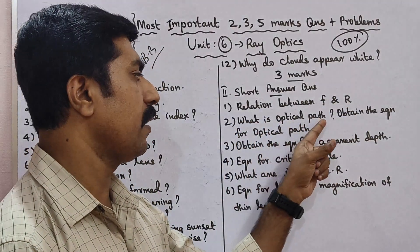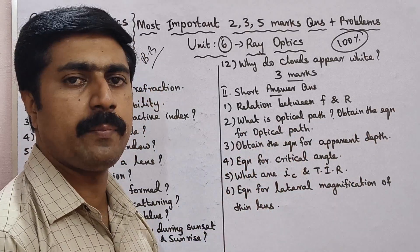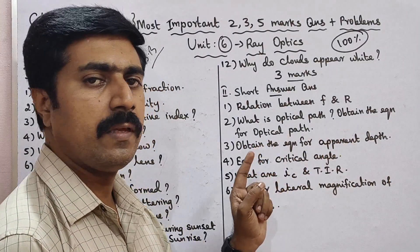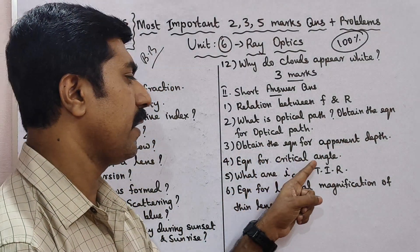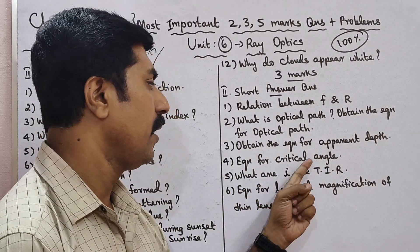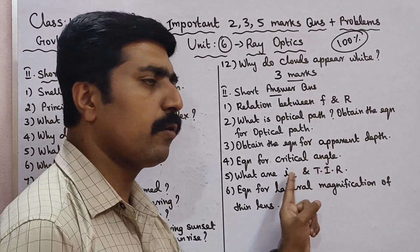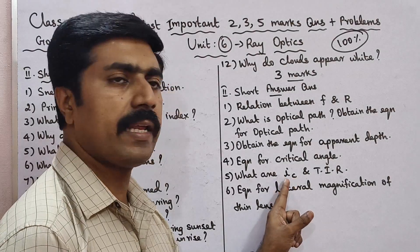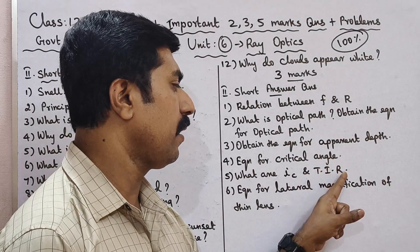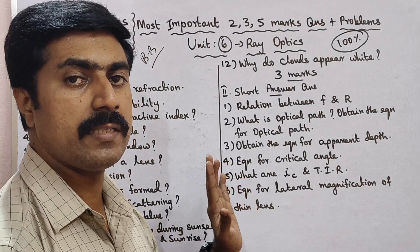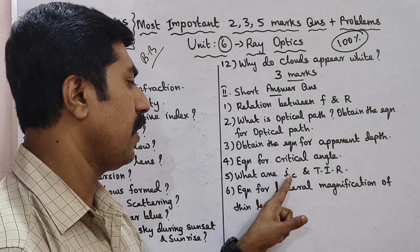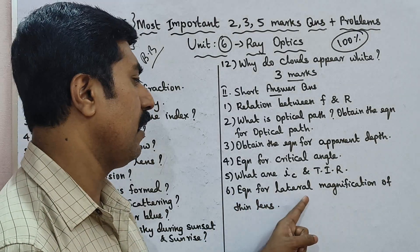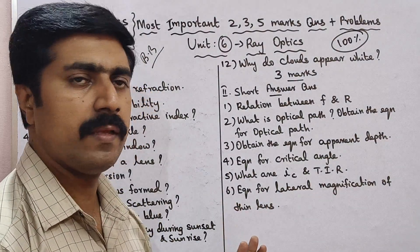For 3-mark short answer questions: Question number 2 — What is the equation for optical path? Question number 3 — Obtain the equation for apparent depth. Question number 4 — Obtain the equation for critical angle. Question number 5 — What is critical angle (Ic) and Total Internal Reflection (TIR)? Know the derivation. Question number 6 — Equation for lateral magnification of a thin lens.